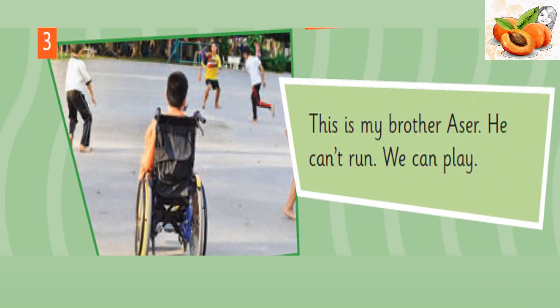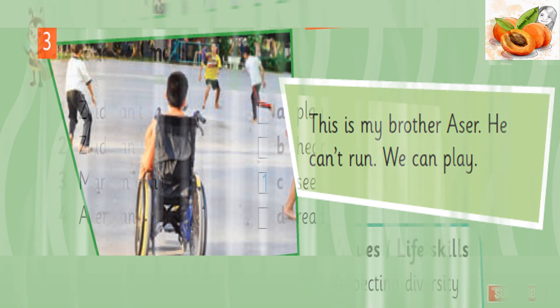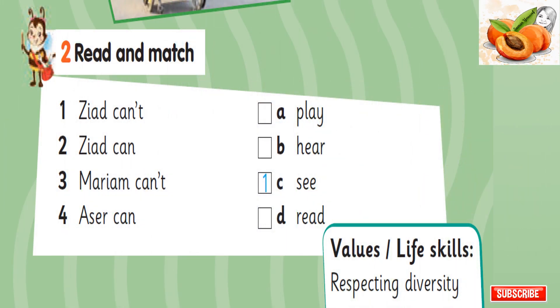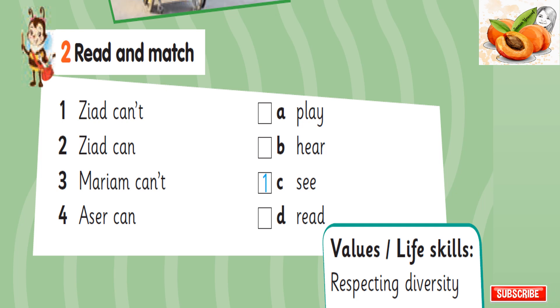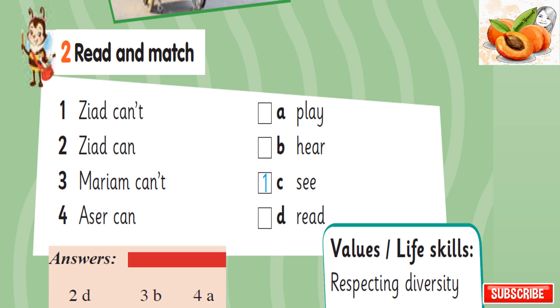This is my brother Asir. He can't run. We can play. Read and match. 1. Ziad can't see. 2. Ziad can read. 3. Mariam can't hear. 4. Asir can play.